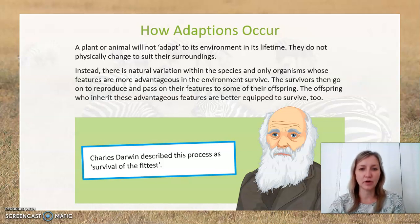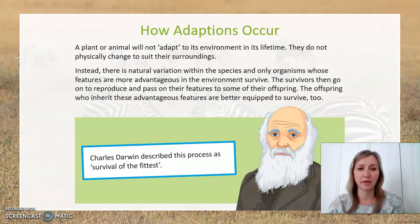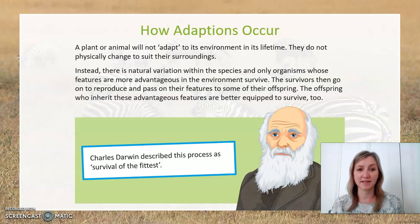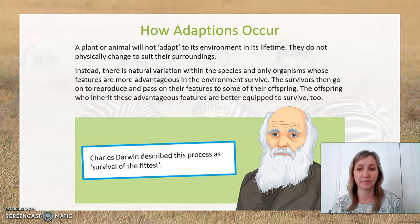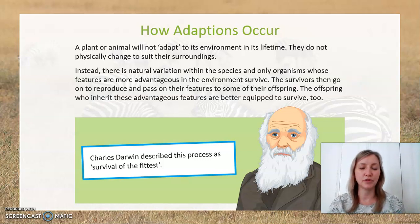One single organism, one particular plant or animal, will not adapt and change to its environment in its lifetime. That's not what we're talking about here today. Instead, we're looking at the variation within a species and the organism that has the best features, the ones that are more advantageous to its survival — those ones will survive. If they're the ones that survive and go on to reproduce, then they're the ones that are going to continue and adapt.